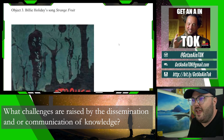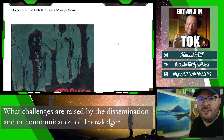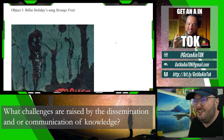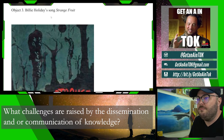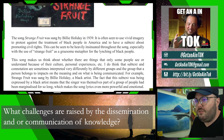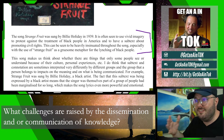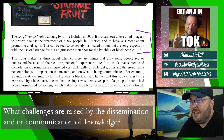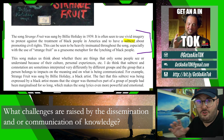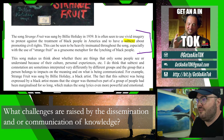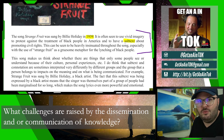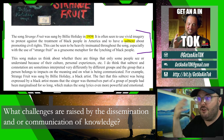Object number three is the song 'Strange Fruit' by Billie Holiday. Look at how the first paragraph does the exact same structure: 'The song Strange Fruit was sung by Billie Holiday in 1939. It is often seen to use vivid imagery to protest against the treatment of black people in America and to have a subtext about promoting civil rights.' Again we've got the theme the student keeps returning to throughout. 'This can be seen to be heavily insinuated throughout the song, especially with the usage of Strange Fruit as a gruesome metaphor for the lynching of black people.' So we've got the context, we've got the object. The student is now going to explore themes of meaning and race through the concepts of subtext and connotation applied in a very effective way.